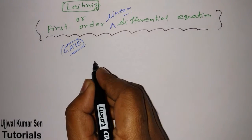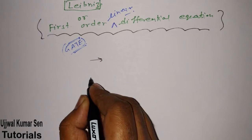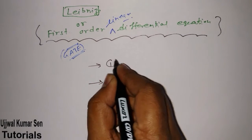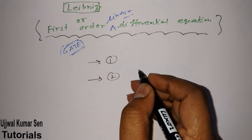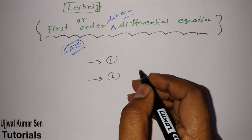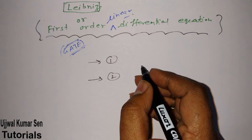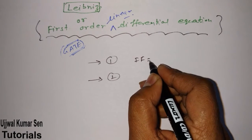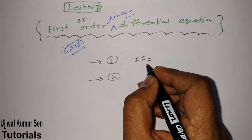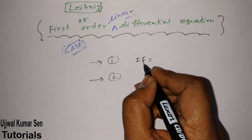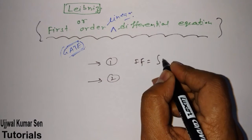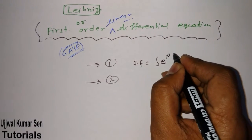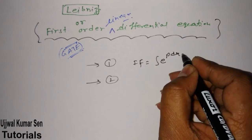So, what is most important in the case of Leibniz or first order linear differential equation? First of all, you have to find out the integrating factor. For finding the integrating factor, we have a formula: e to the power of integral P dx.